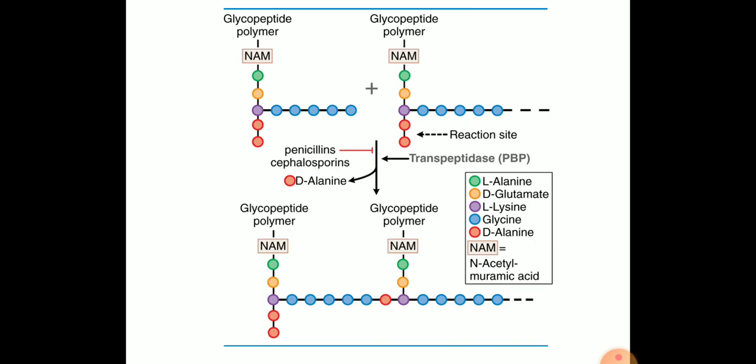Next comes the carbenicillin, ticarcillin those are also extended spectrum penicillin and anti-pseudomonal penicillin. So this is basically the way by which we have classified penicillin group of drugs.